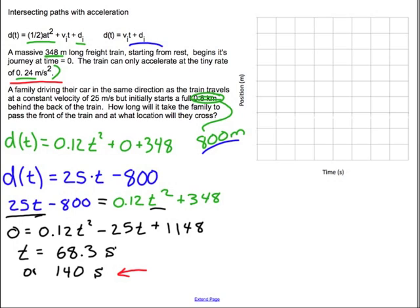You have two locations. The first one is when the car passes the train and then this one is where the train passes the car.